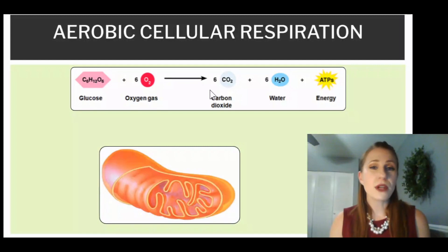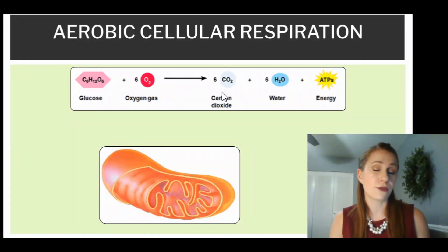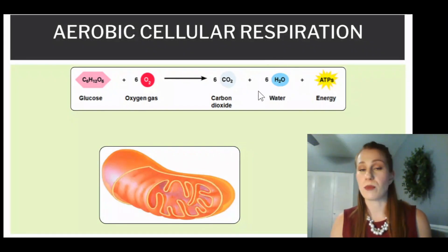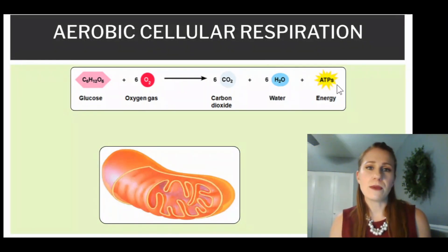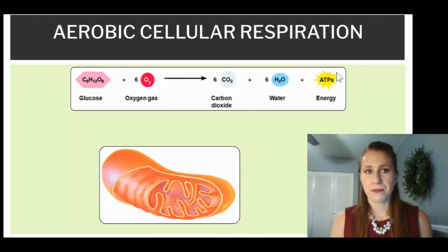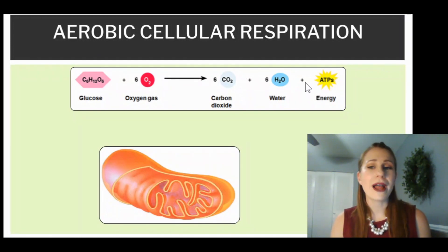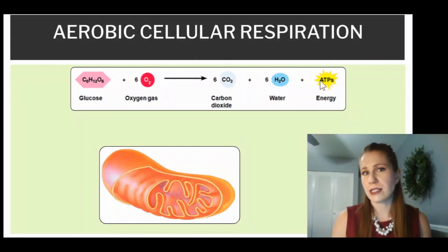We're going to use that to make six molecules of carbon dioxide, which is a waste gas for us, six molecules of water, which we breathe out, and then ATP energy. In aerobic cellular respiration, we're going to be making quite a bit of ATP — between 34 to 38 molecules of ATP.